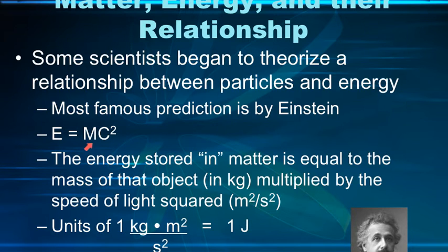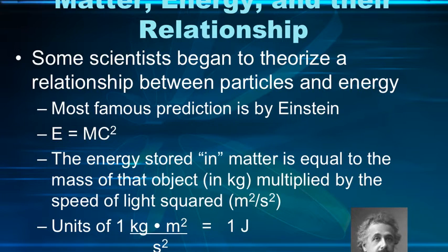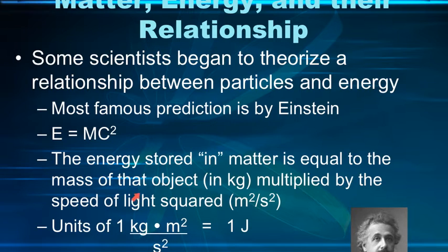E is energy, m is the mass in kilograms, and c is the speed of light squared. The energy comes out in joules. So the energy stored in matter — if you could convert all of the energy in matter into pure energy — this would be the equation for it. This is where we get how atomic bombs can produce enormous amounts of energy from just small amounts of mass. C is a pretty big number, and squaring it gives you a really big number. The energy stored in matter equals the mass in kilograms multiplied by the speed of light squared, giving you units of kilogram·meter² per second², which is what a joule is.